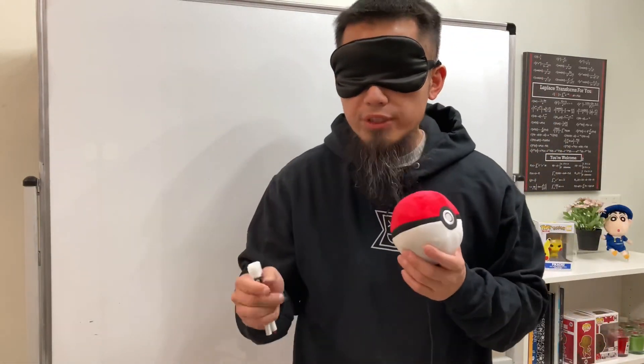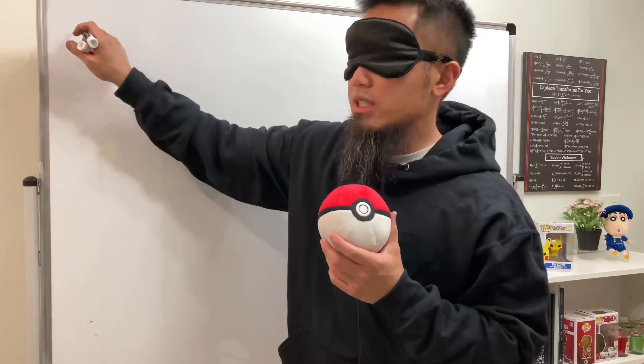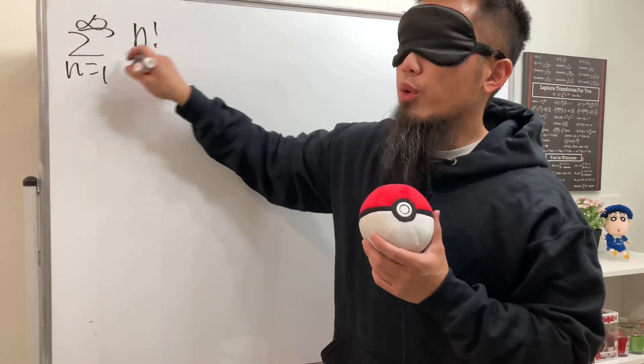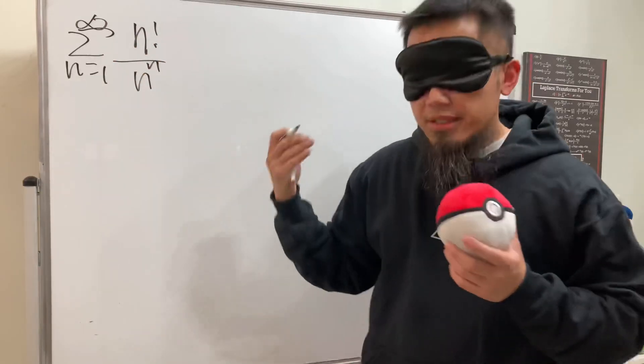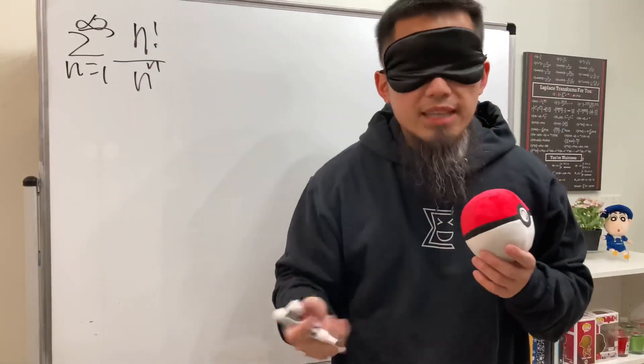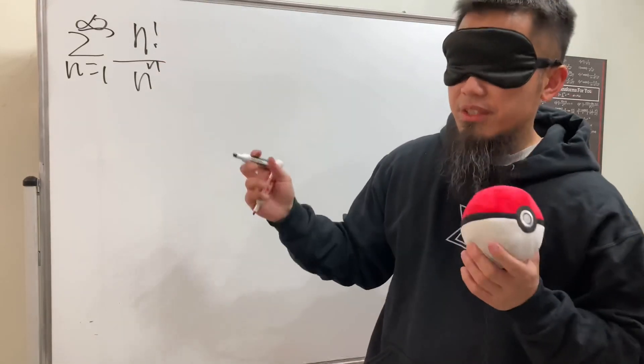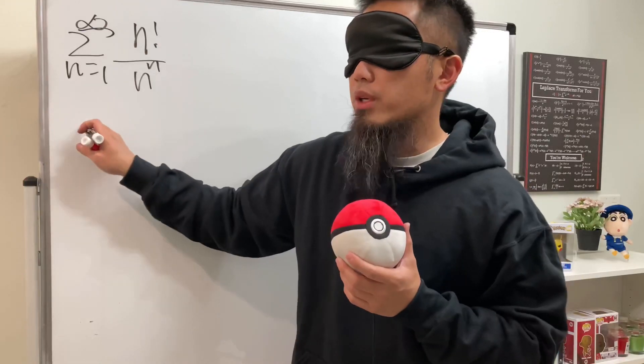Okay, in this video I'll show you guys how to use the ratio test to test this series to see if it converges or not. The series as n goes from 1 to infinity: n factorial over n to the n. This is a classic example to use the ratio test because we see the factorial and also the n in the exponent. That's a good indicator for that.